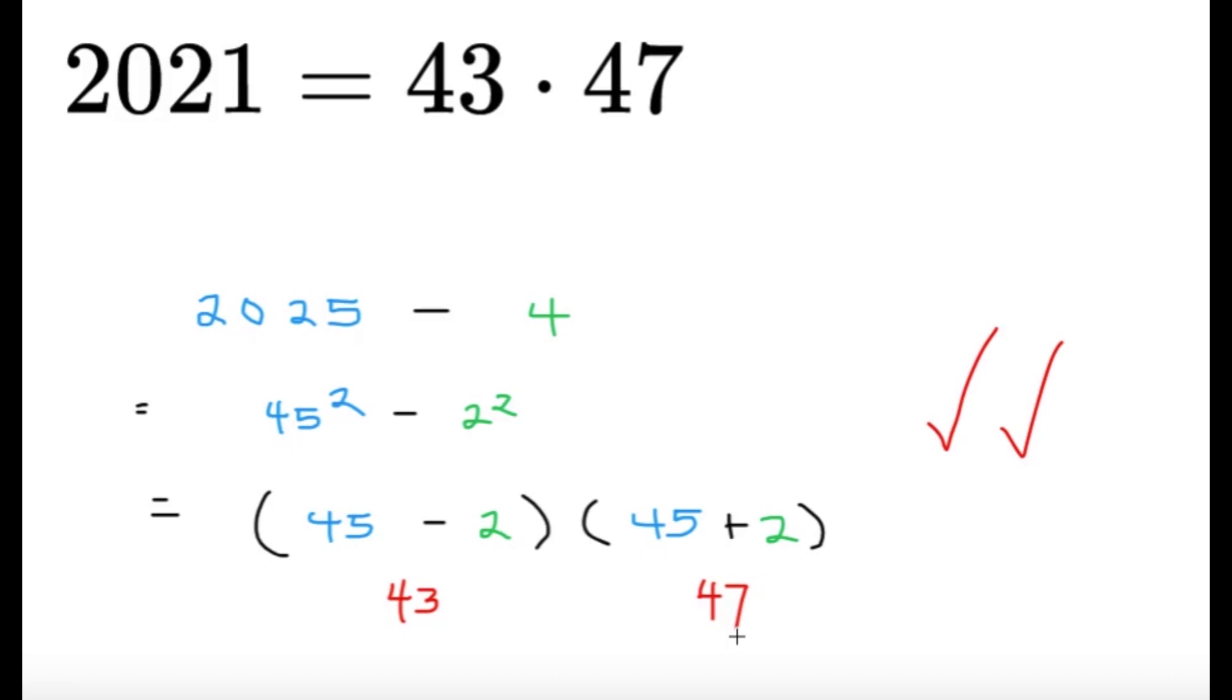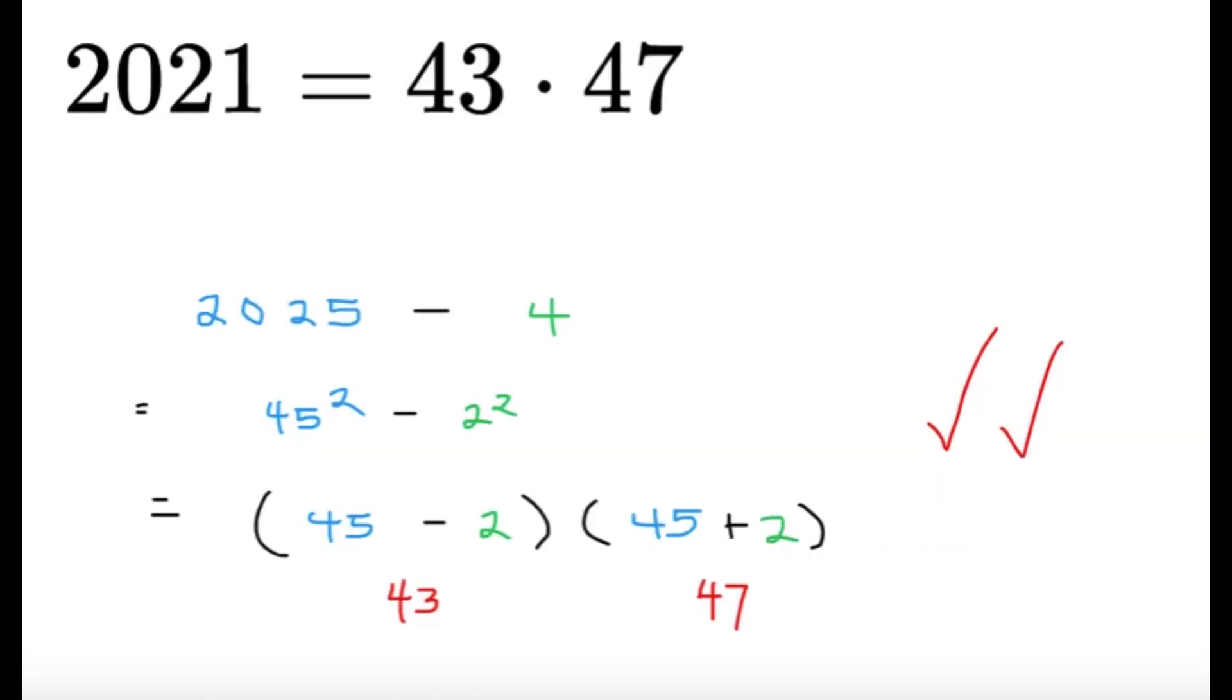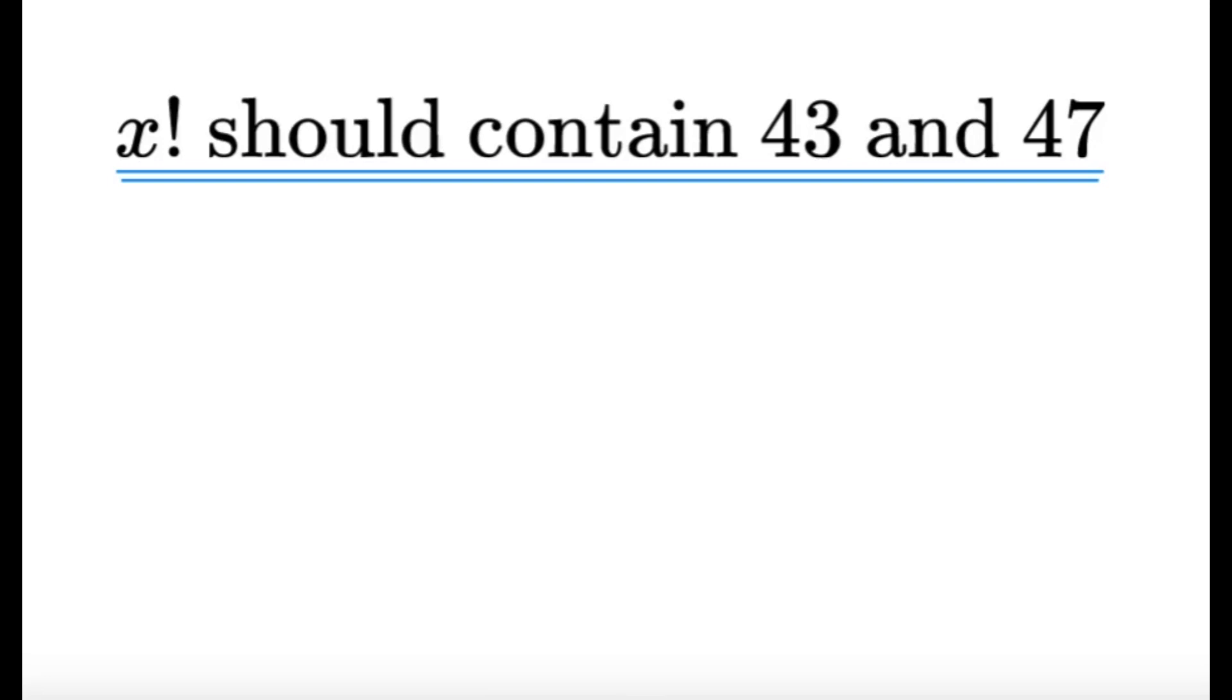So let's go back to the item. We want x factorial to be divisible by 2021, and we realize that 2021 is 43 times 47, then this simply means that x factorial, if I expand it or in the prime factorization of x factorial, it should contain the factors 43 and 47. And I explicitly said about prime factorization because 43 and 47 are actually prime.